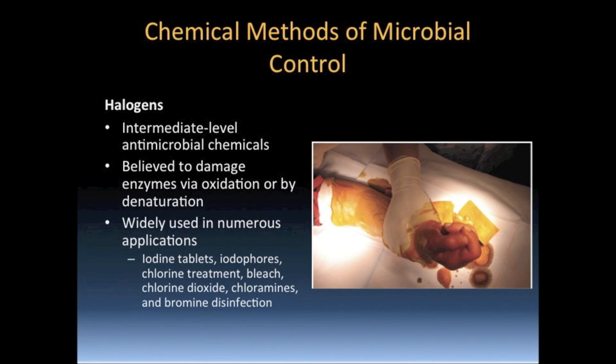Halogens include the non-metallic chemical elements iodine, chlorine, bromine, and fluorine. Halogens are intermediate level germicides. Iodine has the ability to enter cells and oxidize the disulfide bonds of proteins, thereby denaturing them. Iodine may be used in weaker concentrations as an antiseptic and in higher concentrations as a disinfectant. Iodine has also been used in the past by campers and backpackers to treat water. However, some protozoan cysts are resistant to iodine treatment, and the concentration required to kill them is toxic to humans.